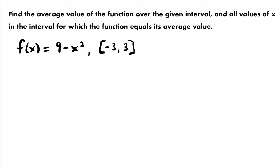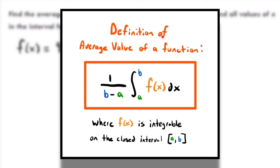To find the average value of a function on a given interval, we need to know its definition. The average value of a function is 1 divided by (b minus a) times the integral from a to b of f(x) dx, where f(x) is integrable on the closed interval from a to b.